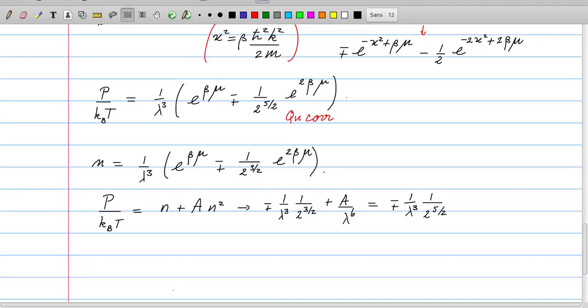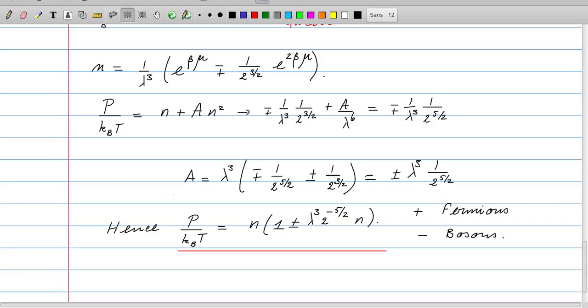This second term should yield this term, and that gives us a prescription for finding this A. From the first term we already have a term containing e^(βμ), and that's this term here. Then if we add A times this term squared, it should give us the result over here. That condition is represented here in this equation, which immediately gives us A. We can write up the final result: A is found as λ³ times 1 over 2^(5/2) with a ± in front. If we put it into this prescription, it directly gives us this.